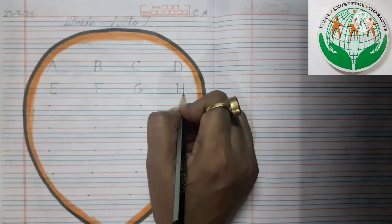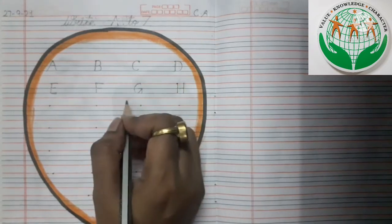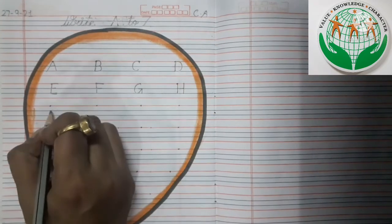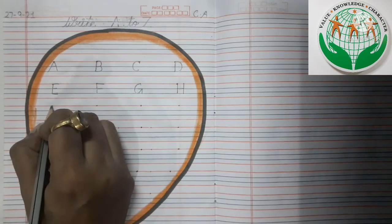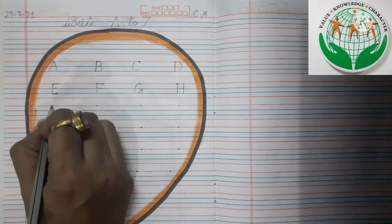H tak letters complete. And now come to the next line. And tell me what comes after H. H ke baad kya aata hai? Yes. Letter I. Letter I.